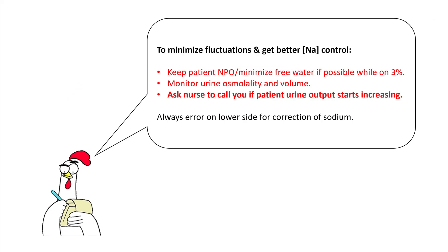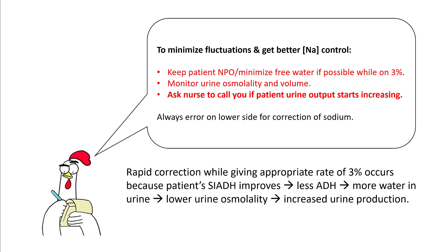To minimize fluctuation and achieve better sodium control, keep patients NPO or minimize free water if possible while on 3% saline. Monitor urine osmolality and volume, and ask nurses to call you if urine output starts increasing — that may mean SIADH is improving and you may need to slow the hypertonic saline rate. Always err on the lower side for sodium correction. Rapid correction while giving an appropriate rate of hypertonic saline occurs not because of the 3% itself, but because SIADH is improving — leading to lower ADH, more water in urine, lower urine osmolality, and increased urine output. The other factors causing rapid increase are eating a lot of solute or having large insensible water losses.